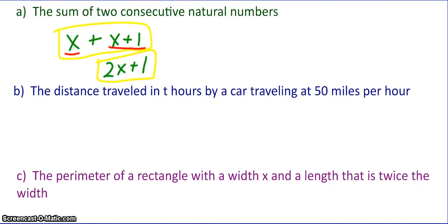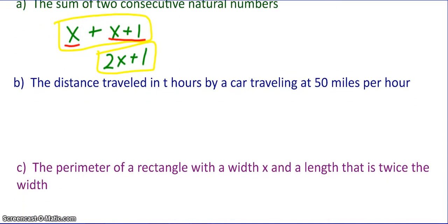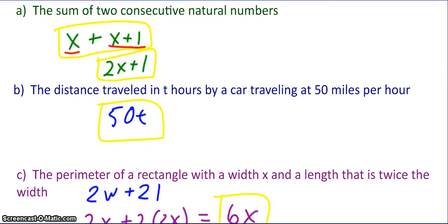So now I want you to do b and c. Pause the video. Write down an algebraic expression for each. Unpause when you're ready to discuss. Okay, I think I misspoke. I meant for you to do the next three. So hopefully you did that. The distance traveled in t hours by a car traveling at 50 miles per hour would be 50t. Remember, we are trying to write an expression. So if we said d equals 50t, that would be an equation. But we just wanted an expression to represent distance, so we just say 50t.